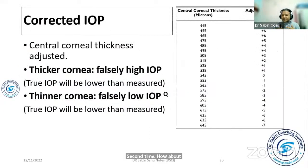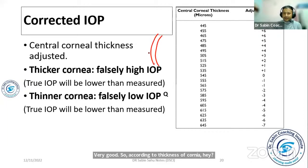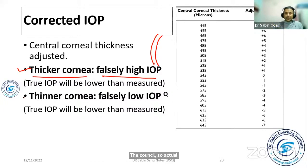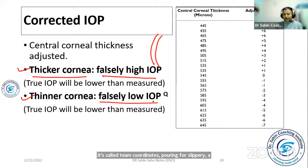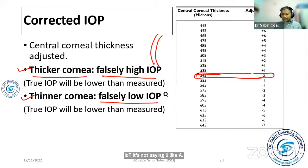IOP measurement is affected by corneal thickness. The normal corneal thickness is 545 micrometers. If the cornea is thicker than normal, more force is needed to applanate it, so the measured IOP will be falsely high. A correction table is used to calculate adjusted IOP. The reference point is 545 µm — if thickness is higher than this, subtract from measured IOP.